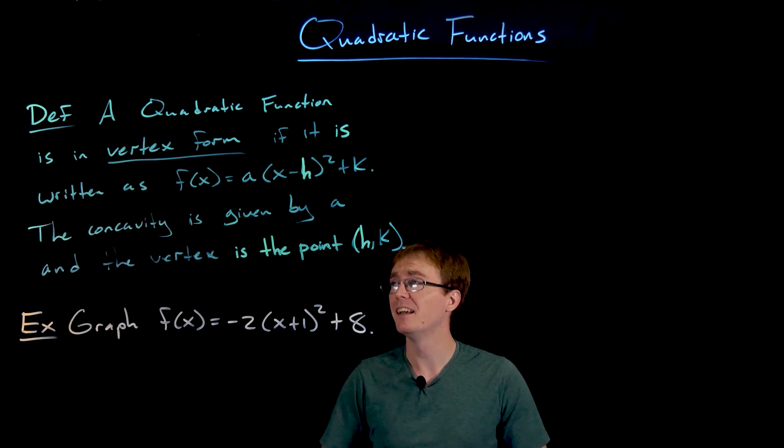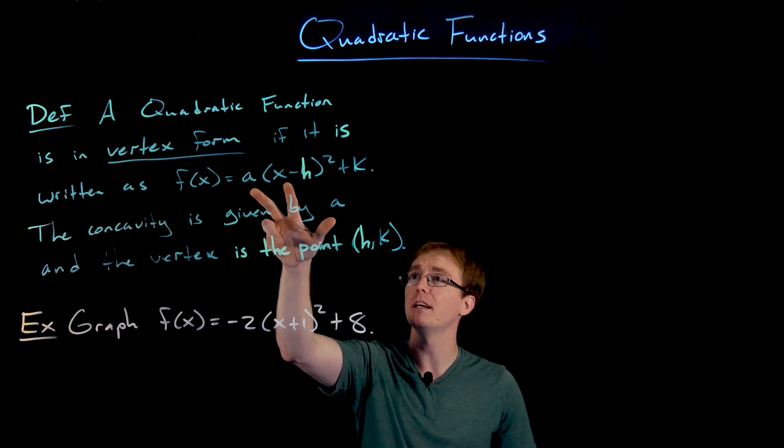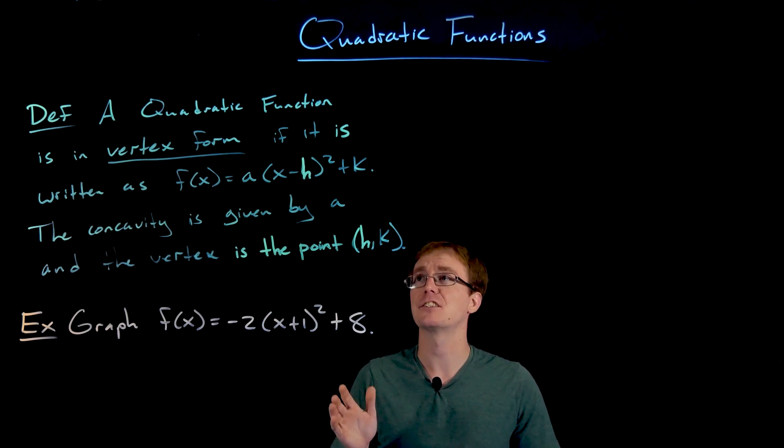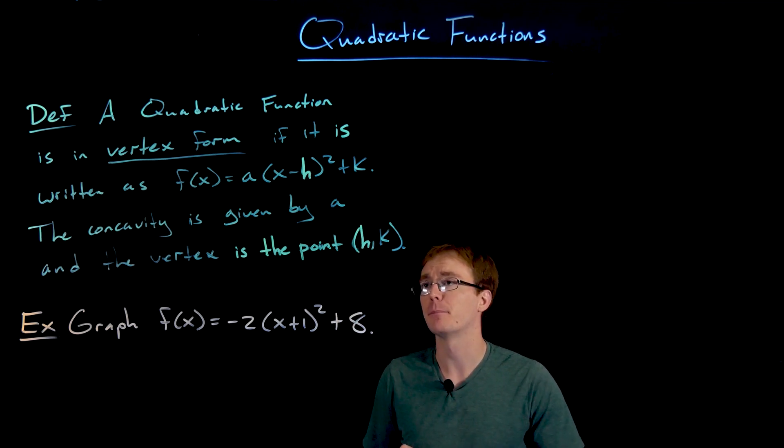We say that a quadratic function is written or expressed in vertex form if its equation is written as a times the quantity (x - h) all squared plus k.